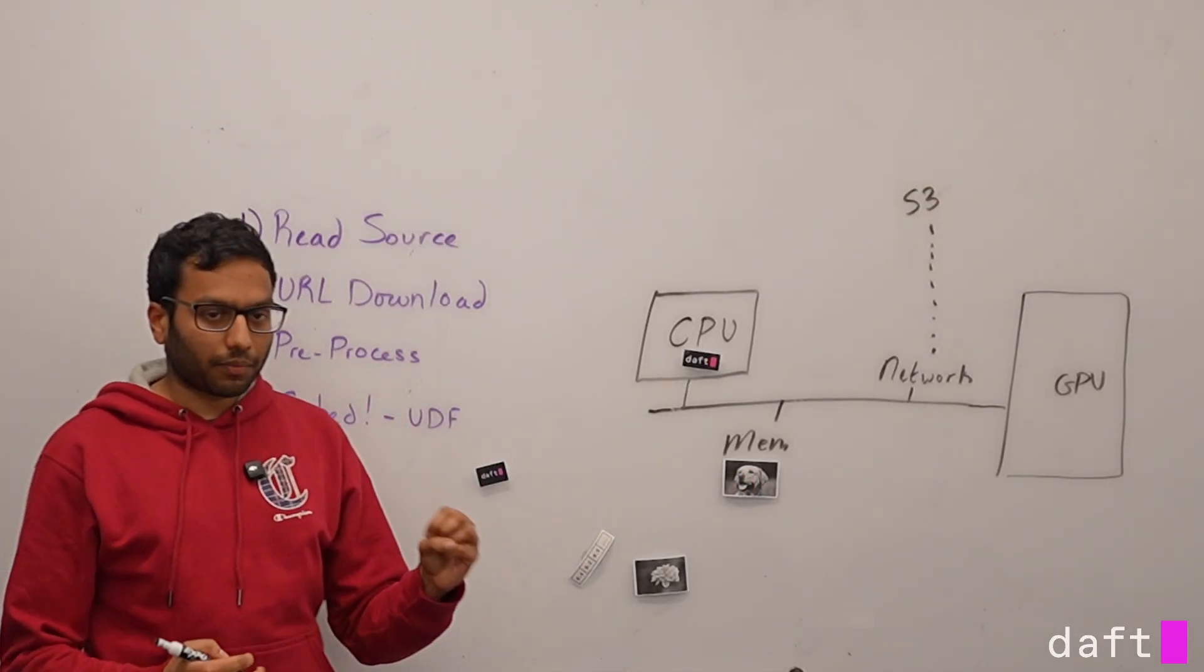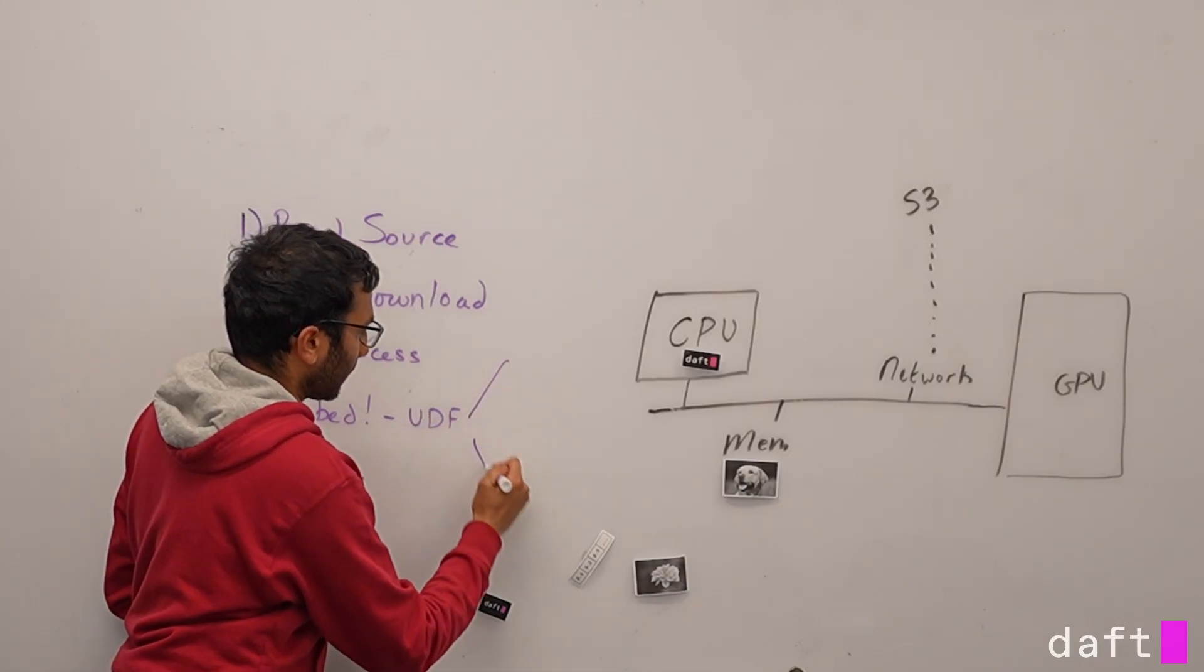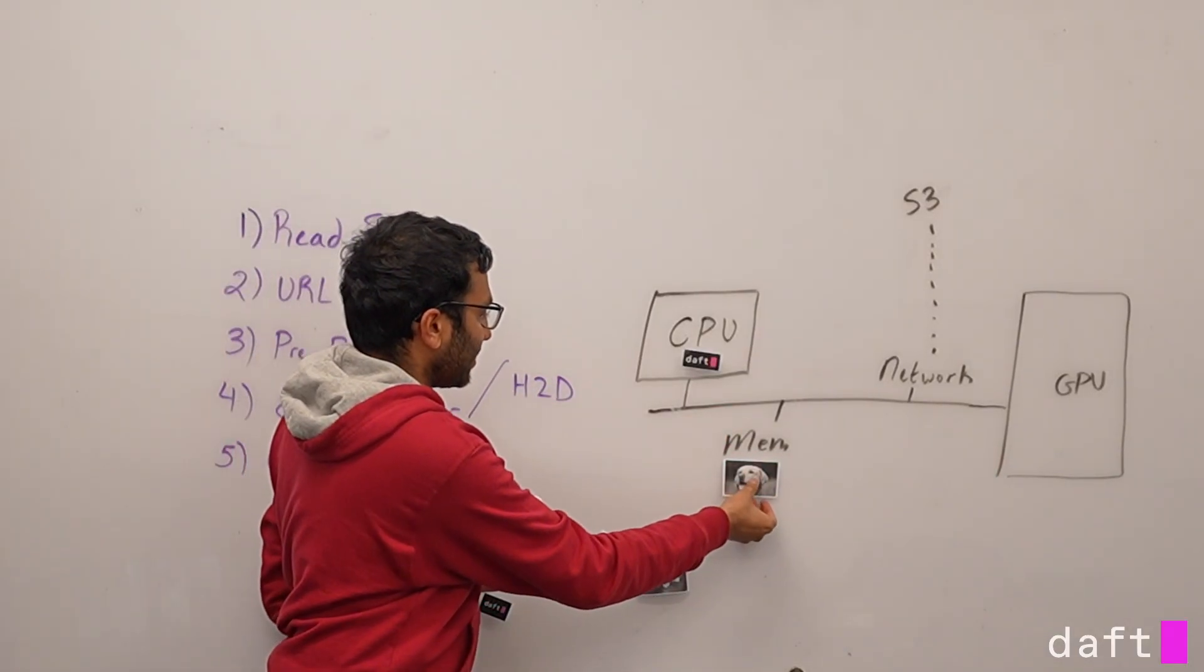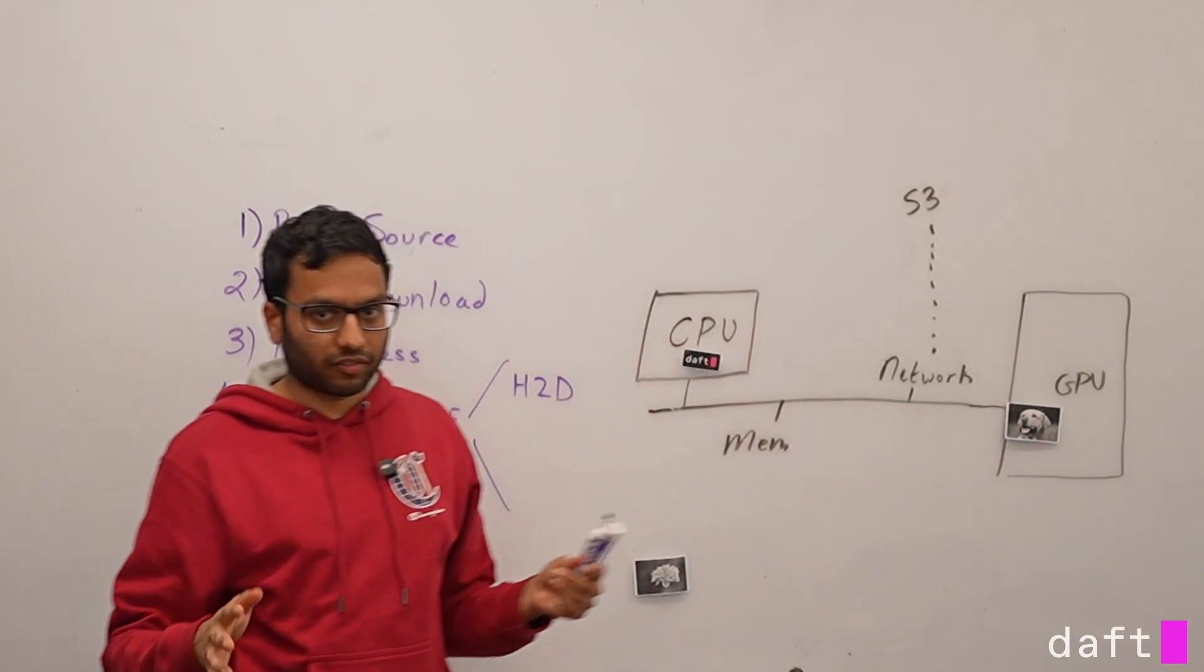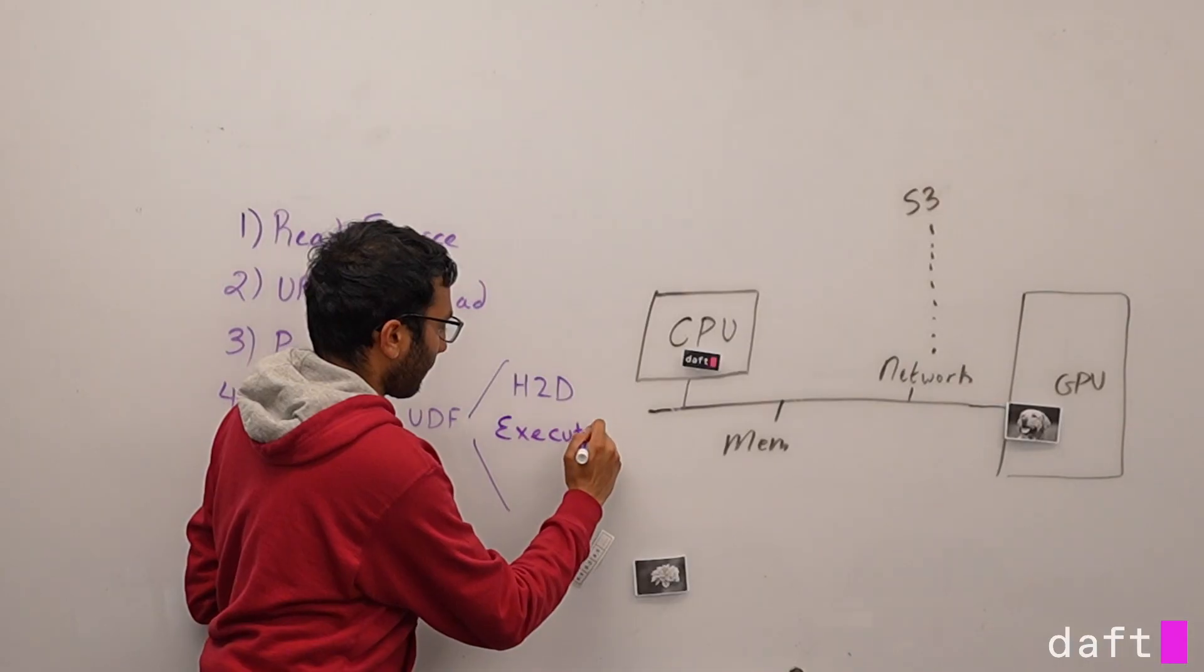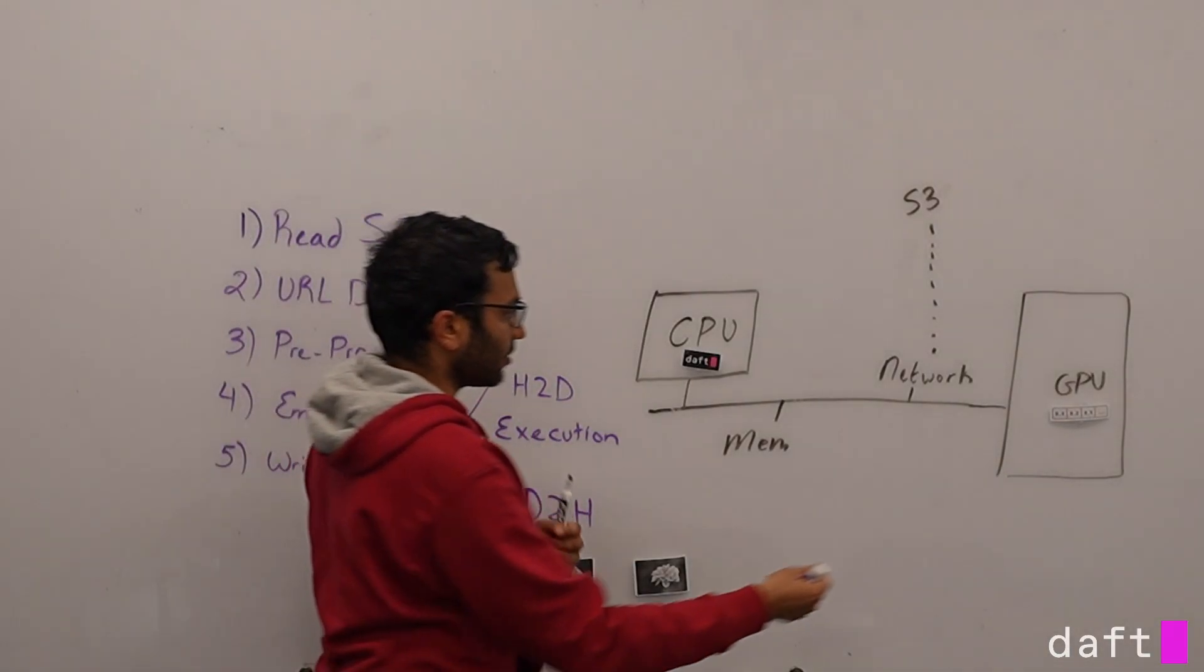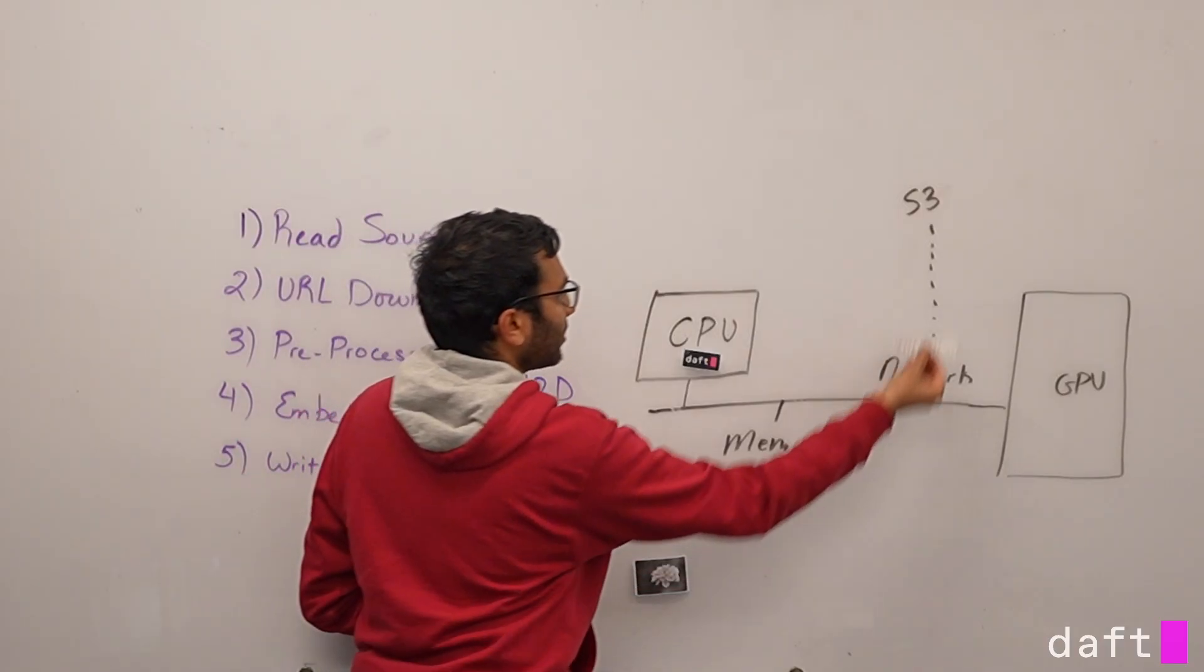Once it reaches the embedding step, you probably do three things. One, you do what we like to call a host to device transfer. In this case, host usually refers to the CPU, the device is the GPU. All that basically means is we transfer the item from main memory into the GPU, because it has its own virtual memory, VRAM. Then we do the actual model execution, taking that image and turning it into an embedding. And then we bring it out via a device to host transfer, moving it back. At this point, DAFT can then take that embedding and write it out somewhere.